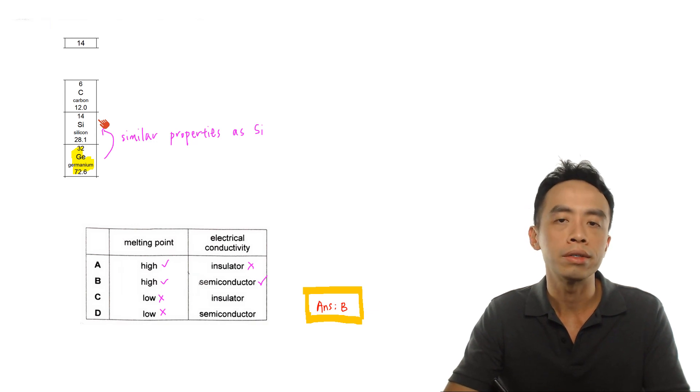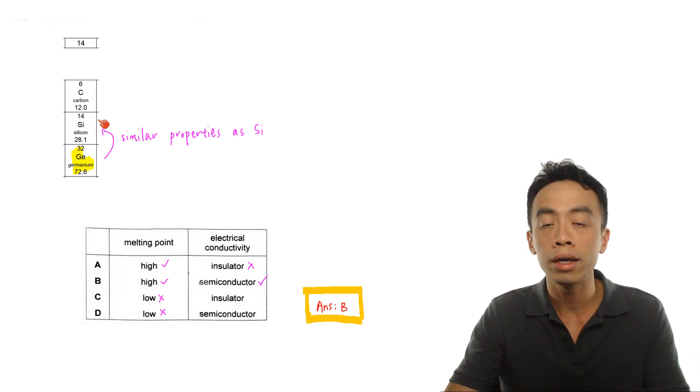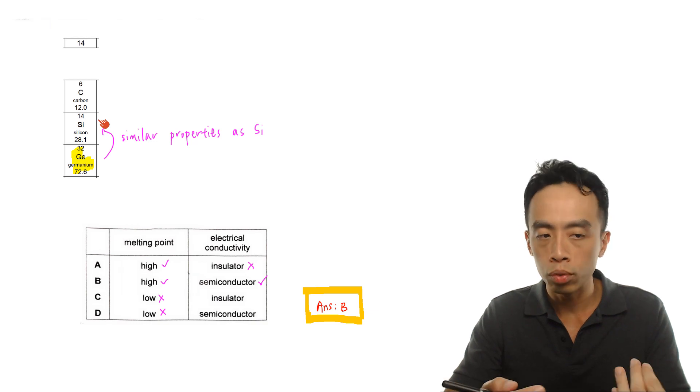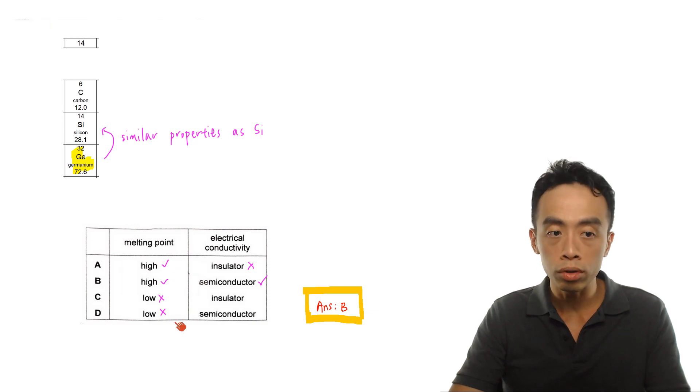We know that silicon is a semiconductor with a very high melting point, so we would expect germanium to be essentially the same. If I compare melting point, we will choose the high melting point, because silicon exists as a giant molecule.